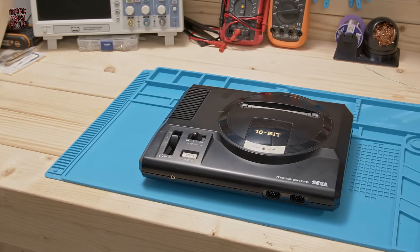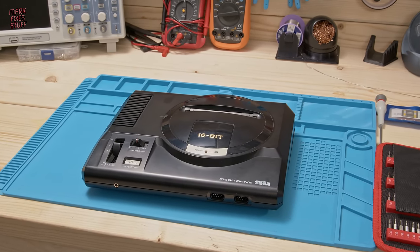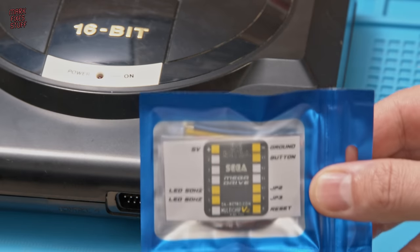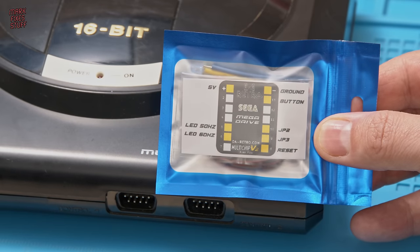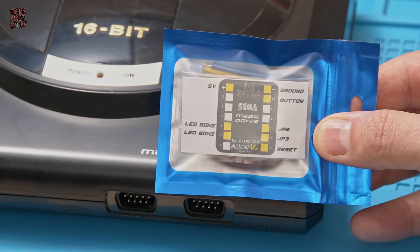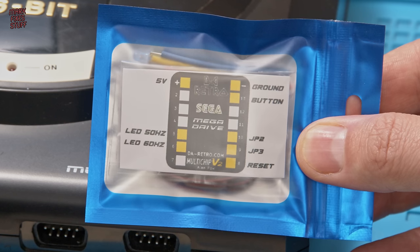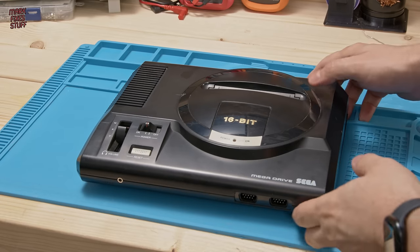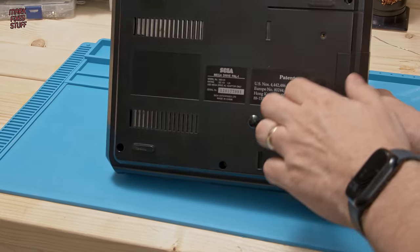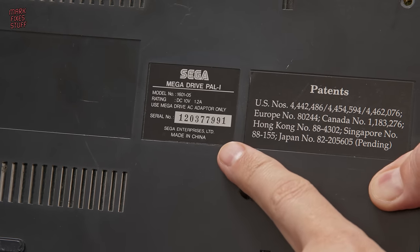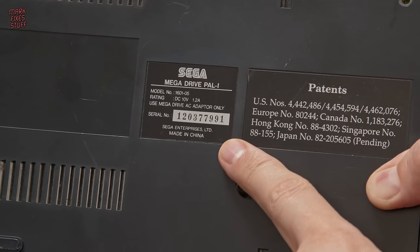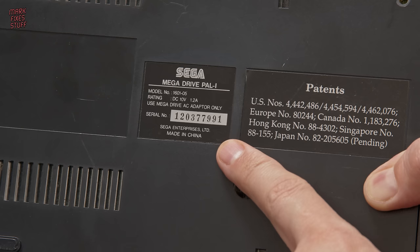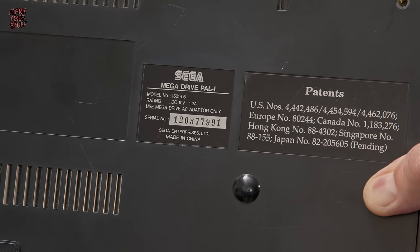So this is our Sega Mega Drive. A fairly common console in the UK and pretty easy to come by. And we'll be installing this mod from Diretro. It's switchless and switches between 50 and 60 hertz and also sets the console into the US, Japanese and European regions. Checking the underside of our console we can see for sure that this is a PAL Mega Drive. It will only play cartridges in 50 hertz that are set to the European region or no region at all.